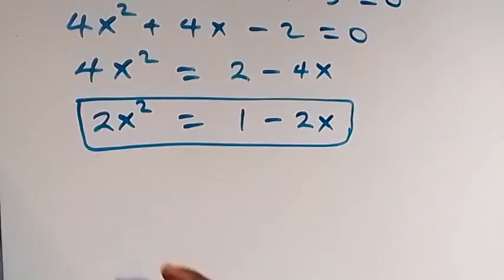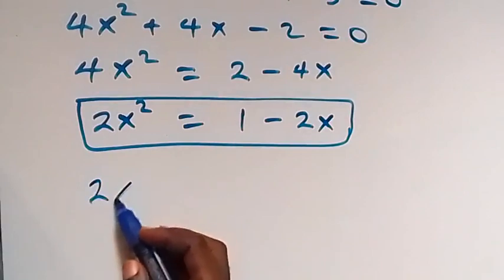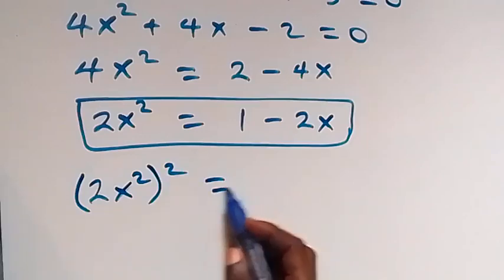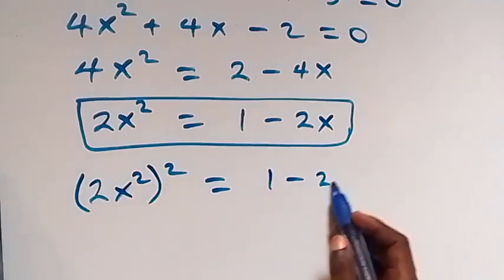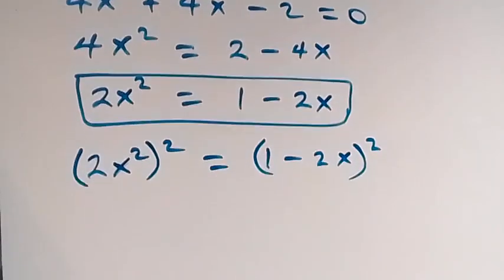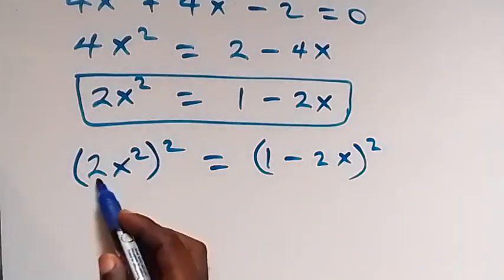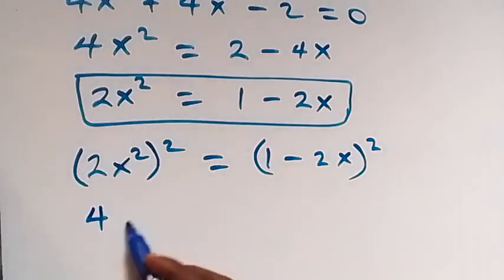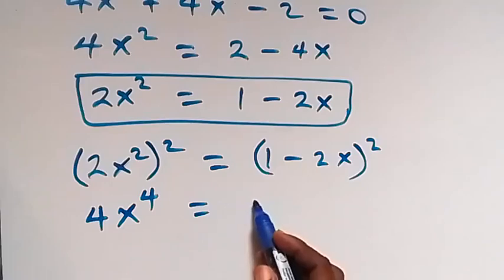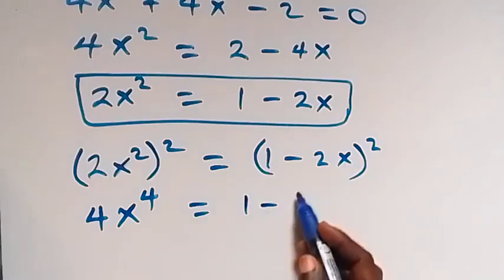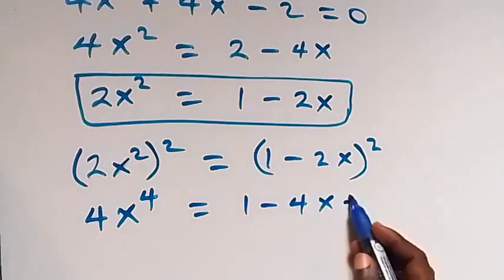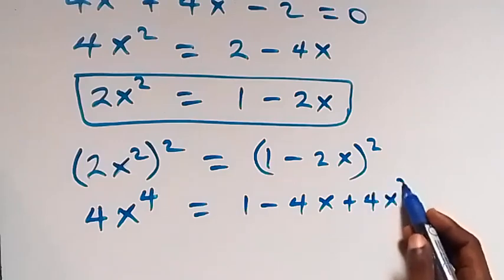Now let's square both sides again. We have (2x²)² equals (1 - 2x)². On the left side the square affects 2 and x², giving 4x⁴. On the right side we expand to get 1 minus 2 times 1 times 2x, which is 4x, plus (2x)² which is 4x².